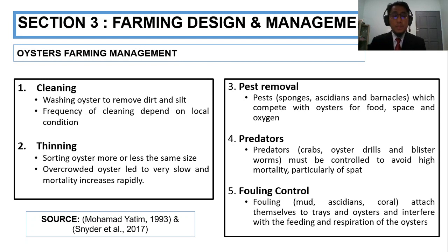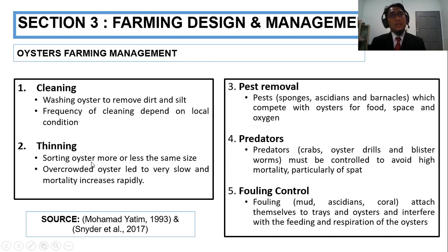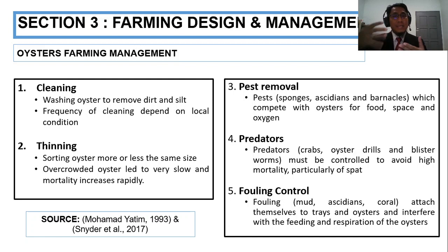Third, we must remove pests such as sponge, ascidians, and barnacles, which compete with the oyster for food, space, and oxygen. Regarding predators — oyster crabs, oyster drills, and blister worms must be controlled to avoid high mortality. Lastly, fouling control is important — fouling from uncleaned nets can harm the oyster by affecting feeding and respiration.